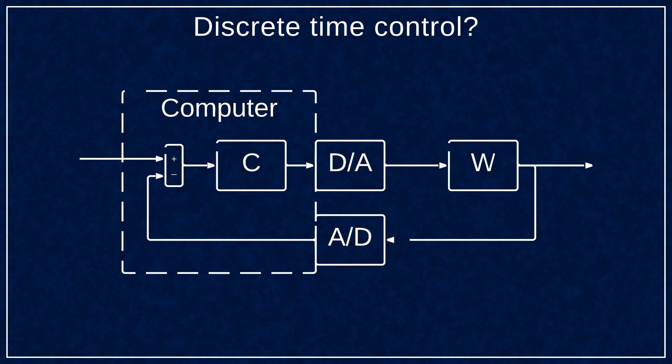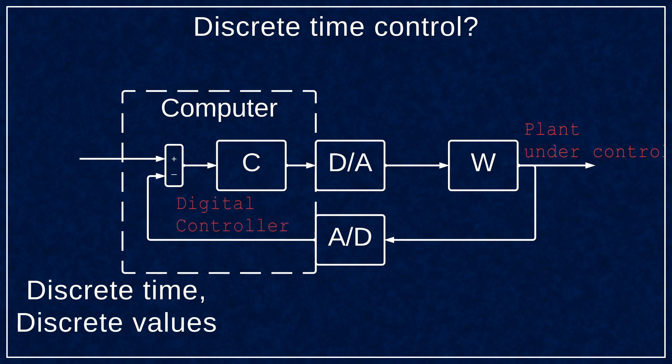So what is discrete time control and why talk about it? The vast majority of control systems are digital. You have a computer or some embedded processor interacting with the real world.